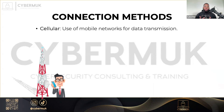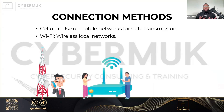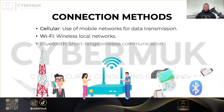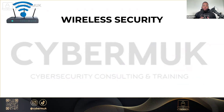How are mobile devices used for connections? You can connect with a cellular method — the use of mobile networks for data transmission. You can connect with Wi-Fi networks — wireless local networks. And Bluetooth — short-range wireless communication. Let's talk about wireless security, which is important because as much as you secure physical devices, you also have to secure the wireless transmissions that you don't see.